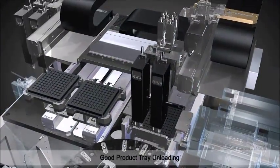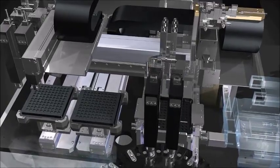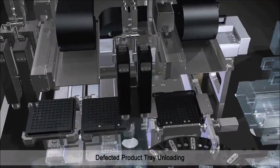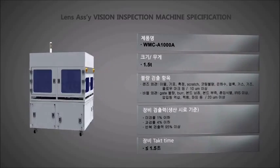After inspection, good products are unloaded to the good product tray and defective products are unloaded to the defective product tray separately, enabling efficient production.